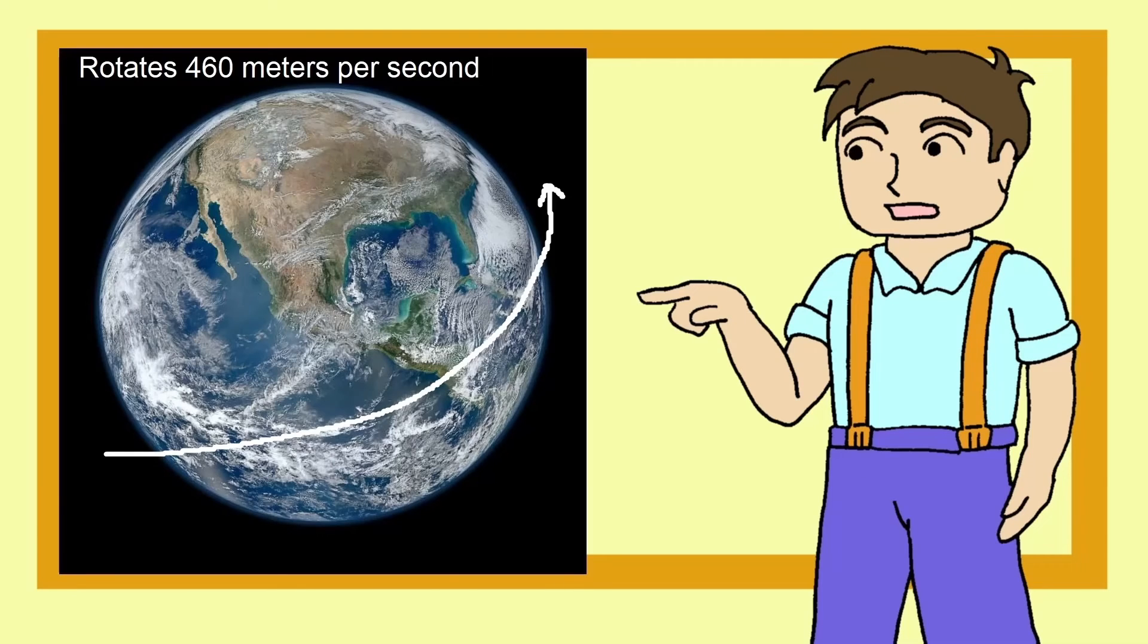The Earth, for example, at the equator rotates at about 460 metres per second. That means that if you moved only 10 seconds forward in time, you would be 4.6 kilometres away from the location you were at.